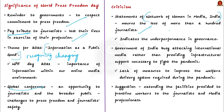Journalists put their lives at stake to bring us important information. The author criticizes the government by indicating its underperformance in governance — that the government of India is busy attacking international media exposing drawbacks in healthcare facilities rather than providing infrastructural support necessary to fight the pandemic. The author also criticizes that the government wants diplomats to counter narratives of foreign media rather than improving welfare delivery systems. The author suggests extending the facilities provided to frontline workers to journalists and media professionals, so that journalism can thrive as a public good.